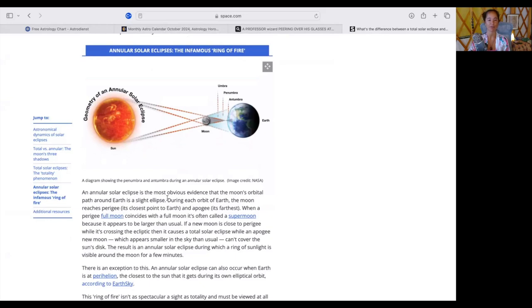And lower down in this article, this is on space.com. It really explains the difference between the annular and the total solar eclipse. So during each orbit of the earth, the moon reaches perigee, its closest point to earth and apogee, its farthest. When a perigee full moon coincides with a full moon, it's often called a super moon. So closest to earth, because it appears to be larger than usual. If a new moon is close to perigee while it's crossing the ecliptic, and it causes a total solar eclipse, when an apogee new moon, which appears smaller in the sky than usual, can't cover the sun's disk.